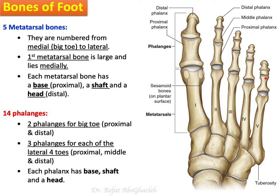Now, the five metatarsal bones and 14 phalanges are long bones. The metatarsals are numbered from medial to lateral: number one corresponds to the great toe, then two, three, four, and five going laterally.